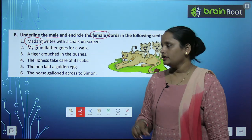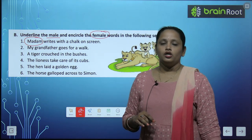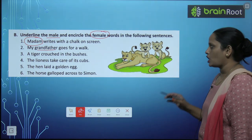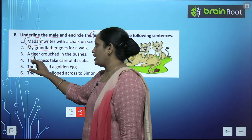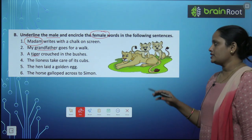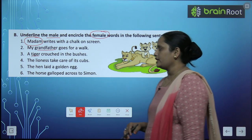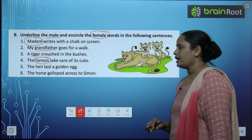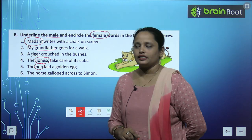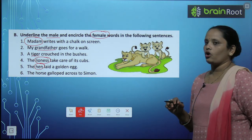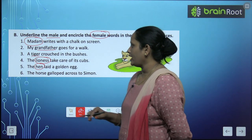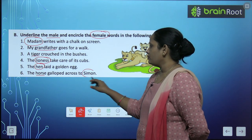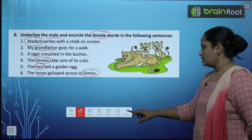Madam is feminine, so we circle it. Second: my grandfather goes for a walk. Grandfather is male, so we underline it. Third: a tiger crouches in the bushes. Tiger is male, so we underline it. Fourth: the lioness takes care of its calves. Lioness is female, so we circle it. Fifth: the hen laid a golden egg. Hen is female, so we circle it. Sixth: the horse gallops across. Horse is male, so underline it. So these are the answers. I hope it's clear to you.